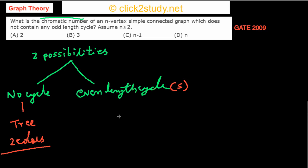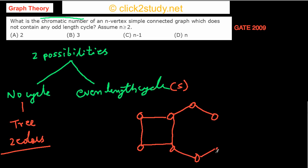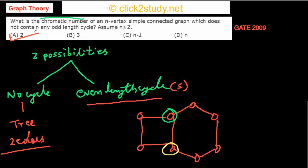Now consider the case where two even-length cycles share a common edge. Assign one color to one endpoint of the shared edge and another color to the other endpoint, then complete each cycle using only those two colors. The key point is: no matter how many even-length cycles there are, whether they share edges or vertices, if there is no odd-length cycle, the graph can always be colored with just two colors. So the chromatic number is two.